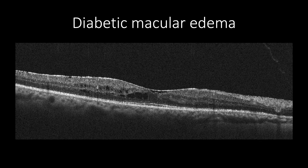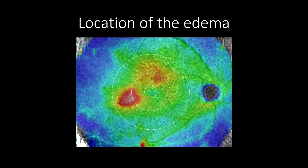OCT can reveal vitromacular abnormalities, such as epiretinal membrane and vitromacular traction, which may change treatment decision-making or reduce the efficacy of intravitreal medication. OCT is very sensitive in measuring macular thickening and locating the edema, as the central or non-central location of diabetic macular edema is key for treatment decision-making, in which OCT can accurately depict the edema's location using tomography.